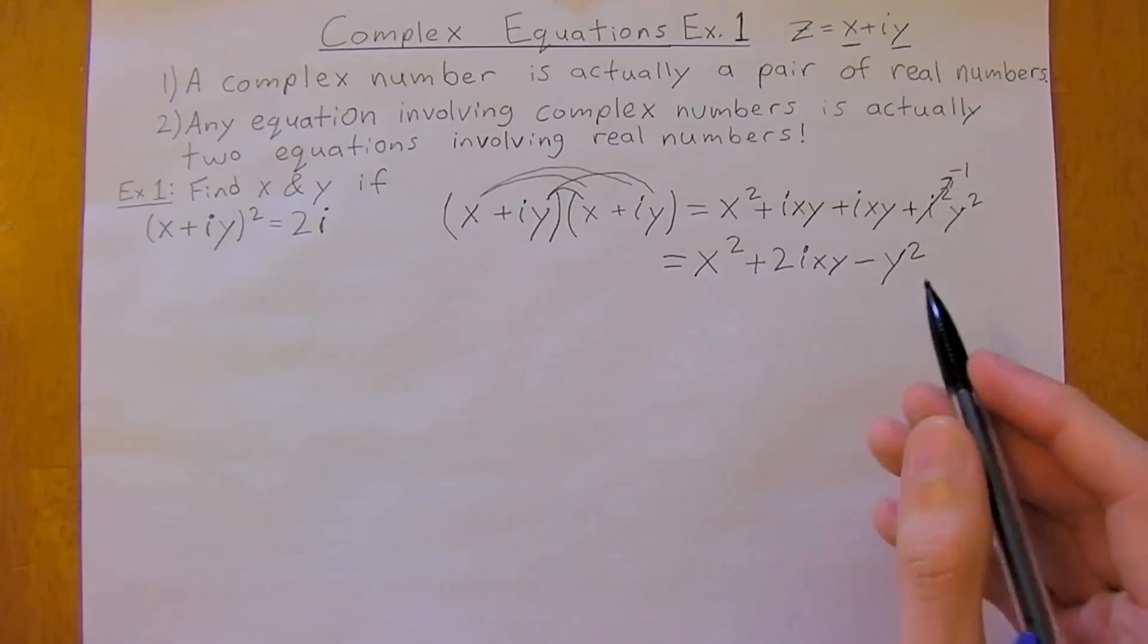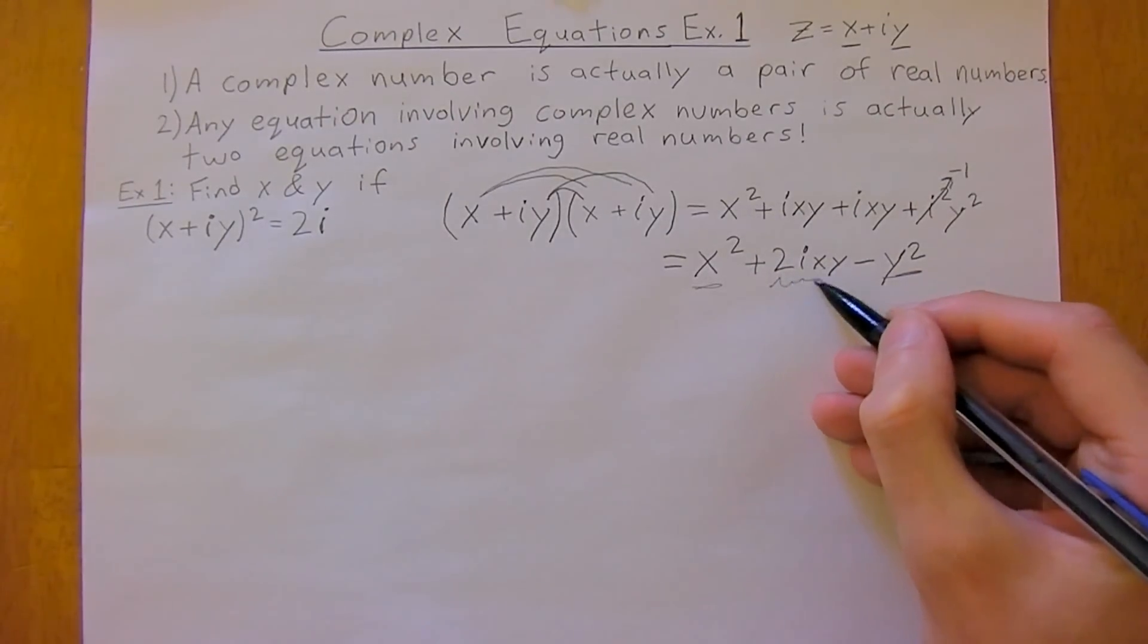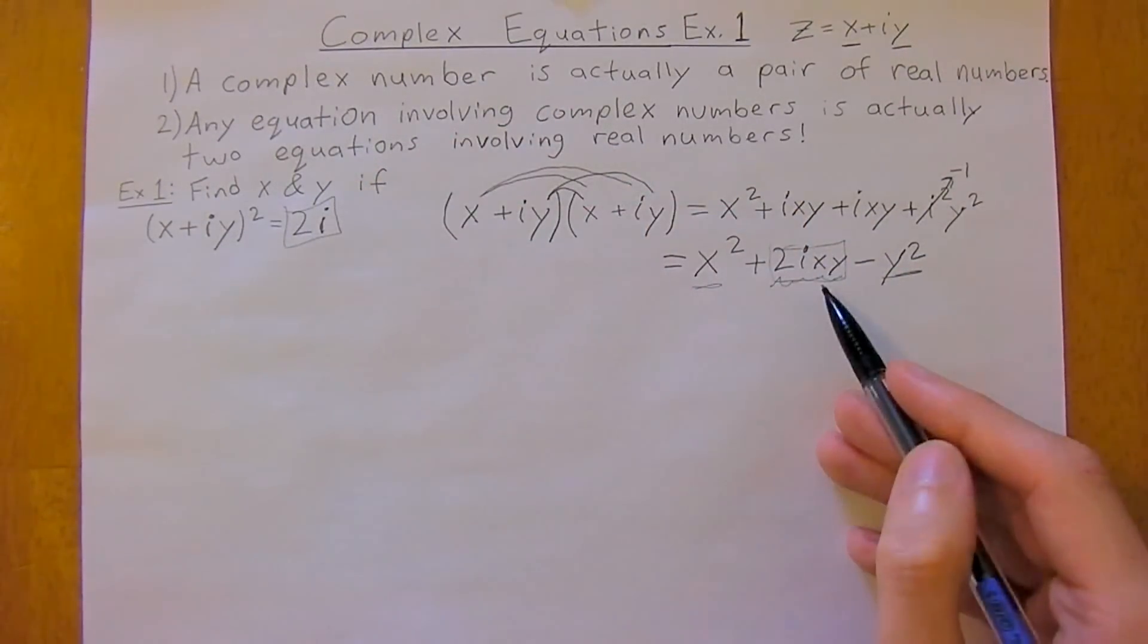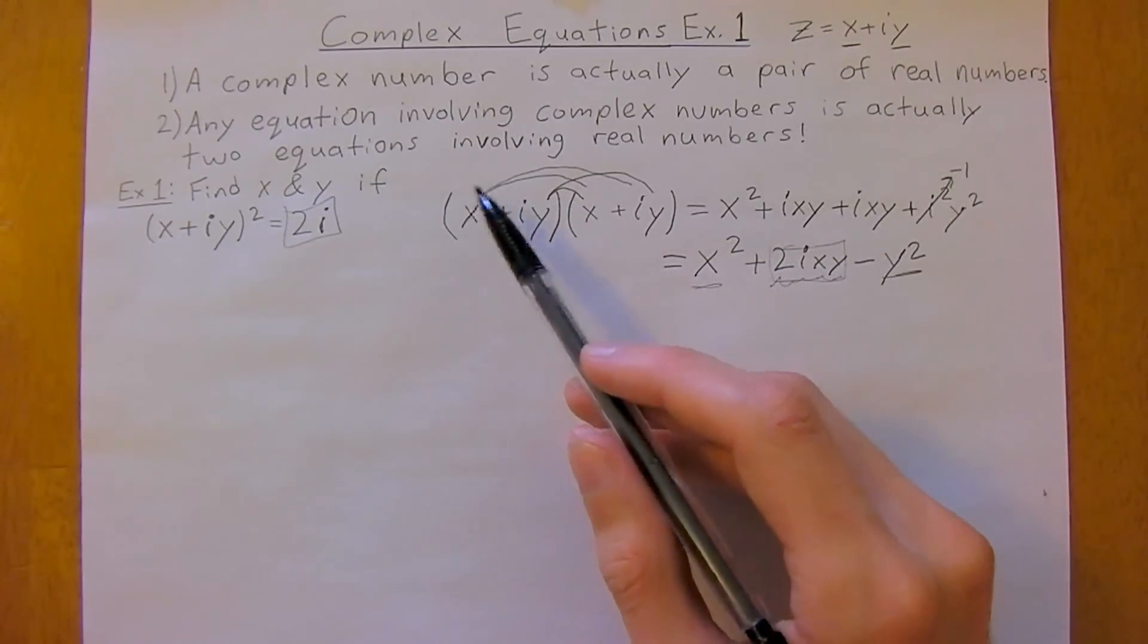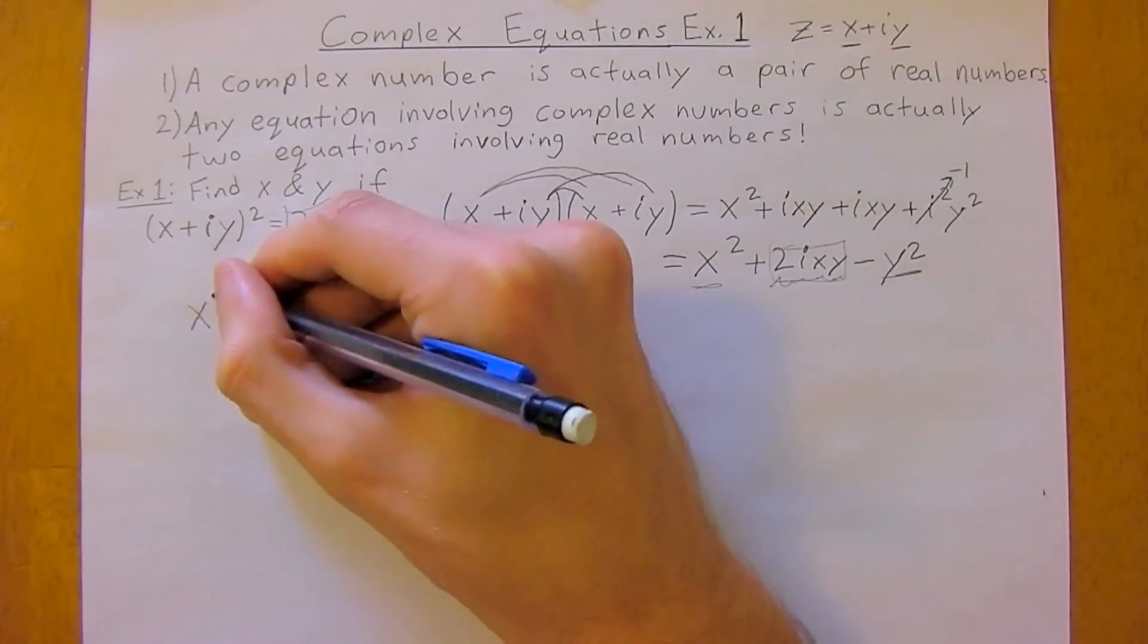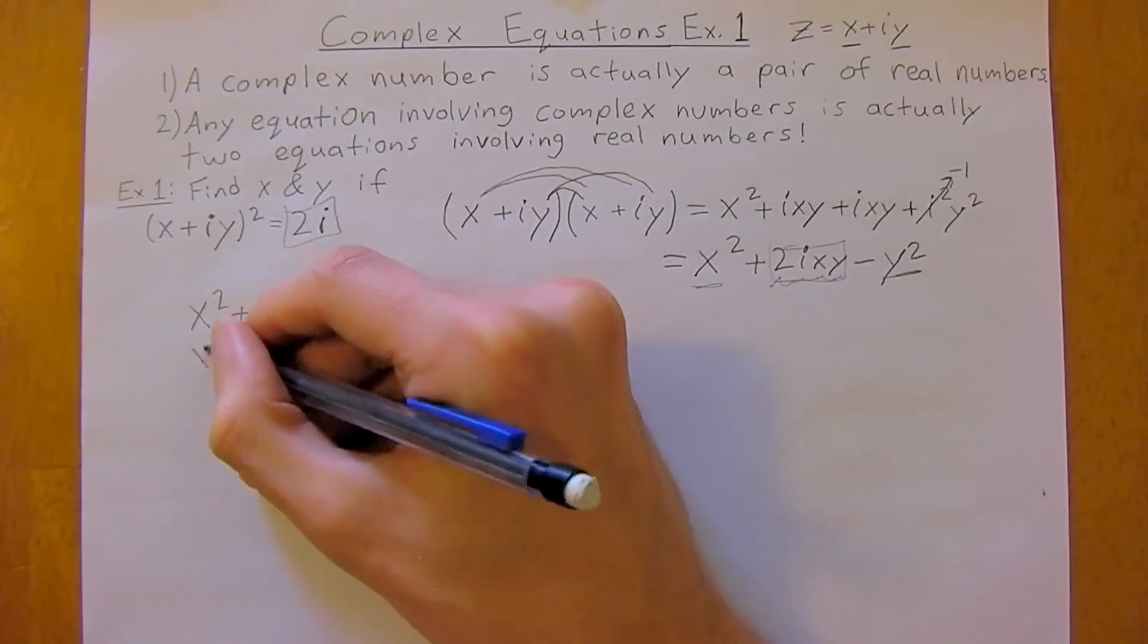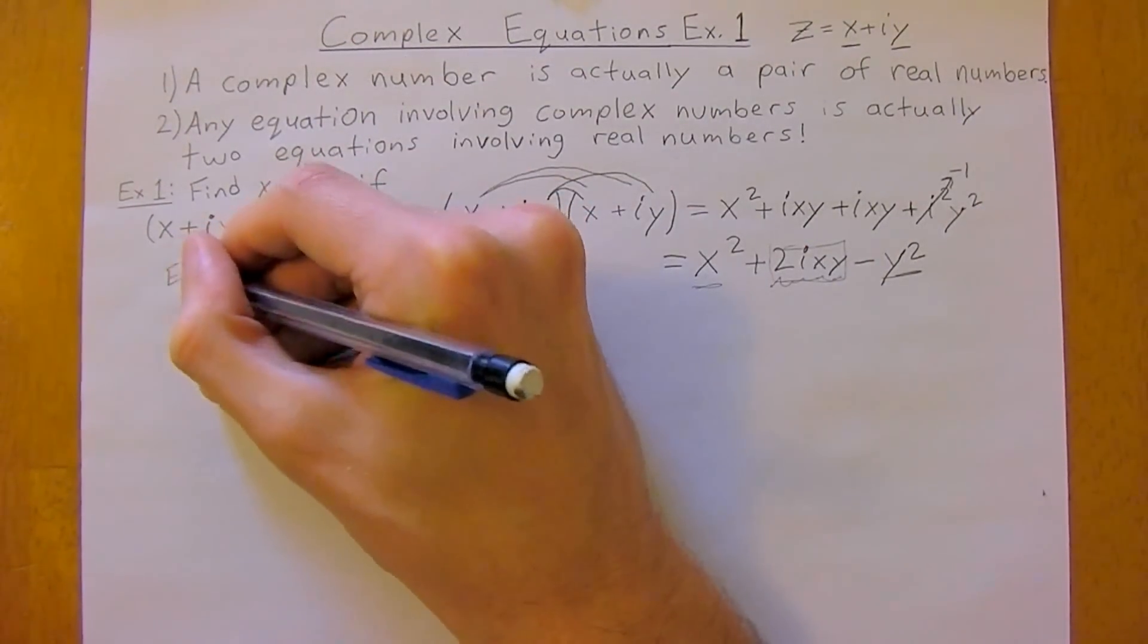Now what we want to do is group these terms together. We're going to group the real terms to get two equations involving real numbers. The first equation is going to be x squared minus y squared equals 0, or x squared equals y squared. That's equation 1.